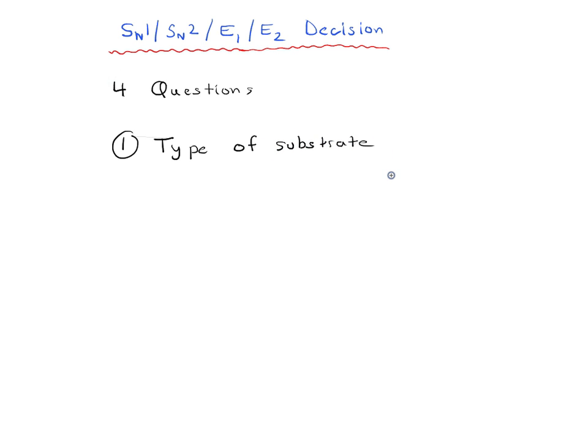And by substrate, we're going to say it really, we're interested in the carbon attached to the leaving group. So in other words, is it primary, is it secondary, is it tertiary, that question. So that's going to have a huge impact on whether a reaction is going to go through SN1, SN2, E1, or E2.